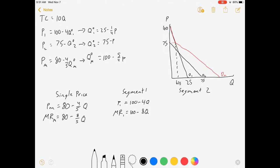And for segment two, we've got P2 equals 75 minus Q. So marginal revenue for curve two equals 75 minus 2Q.